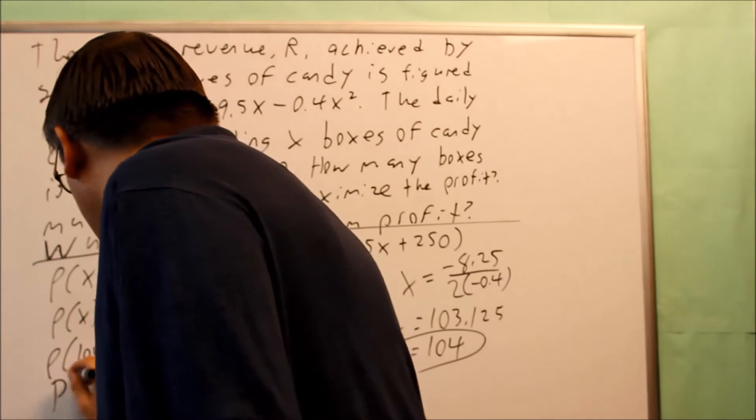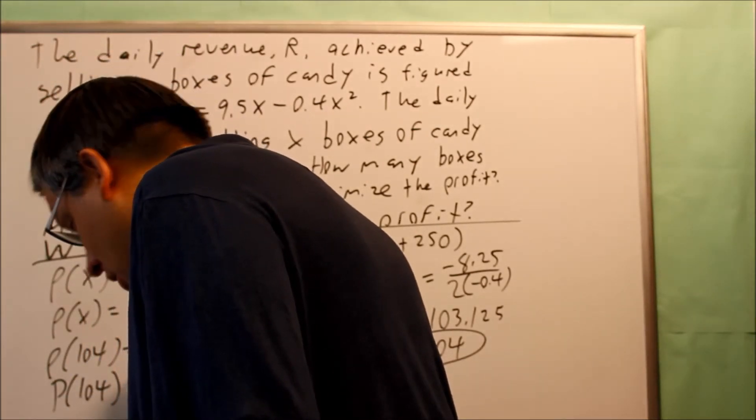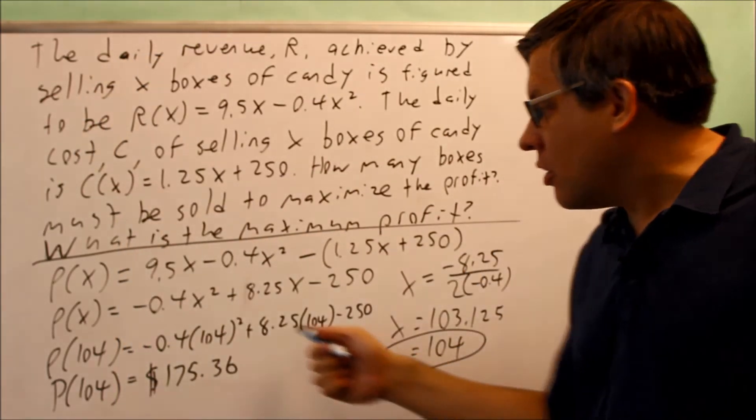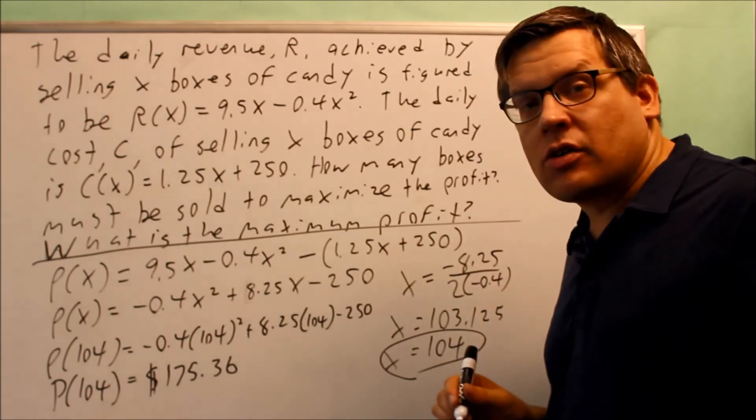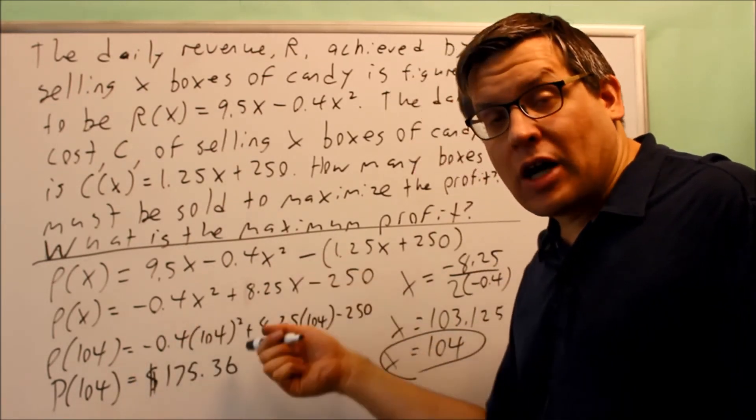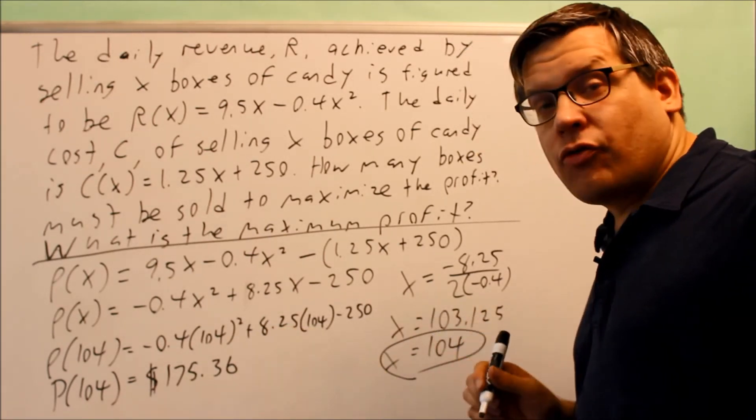If you work this out, the profit's going to end up being $175.36. That's going to be your maximum profit, $175.36. That's the maximum profit you could possibly get from this, and you're going to get it when you sell 104 boxes of candy.